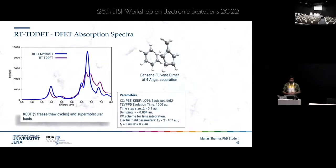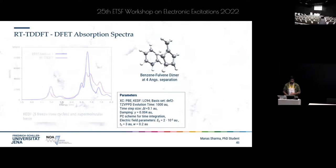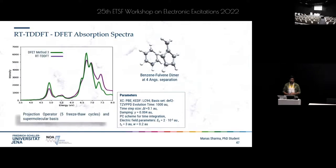For the benzene-fulvene dimer, comparing Method 1 with regular RTTDDFT shows some qualitative agreement, but the peak intensities are quite overestimated. With Method 3, the agreement is much better.